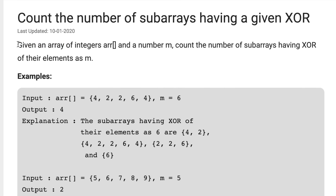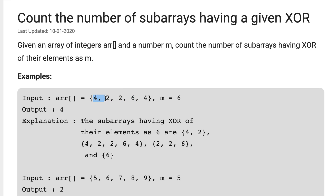The problem states that you'll be given an array of integers and a number m, and your task is to count the number of subarrays whose XOR of all elements equals m. For example, take the array [4, 2, 2, 6, 4] with m = 6. The subarrays giving XOR 6 are: [4,2], [2,2,6], [4,2,2,6], and [4]. So the answer is 4 — you need to print the total count of such subarrays.